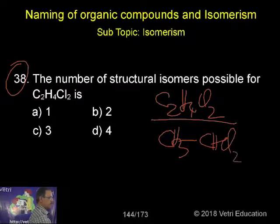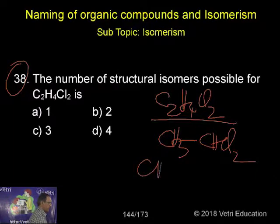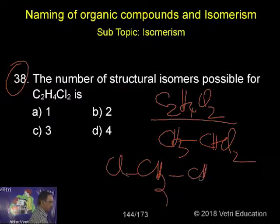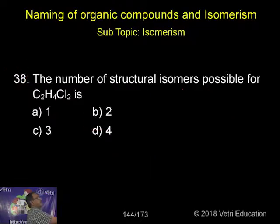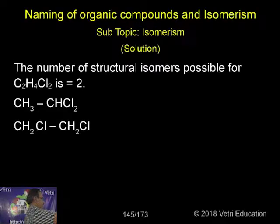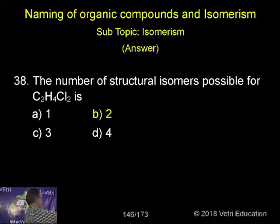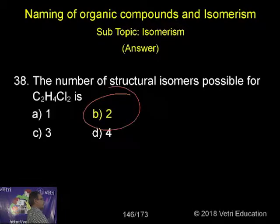One possibility is CHCl₂, another possibility is CH₂Cl. Only two isomers are possible. If you think about it, there are only two possible structural isomers.